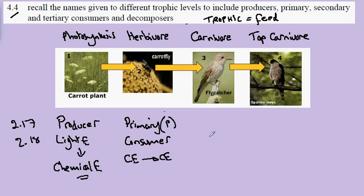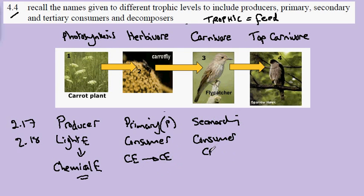The flycatcher eating the primary consumer makes it a secondary consumer, and again this is just changing the chemical energy from one form to another.